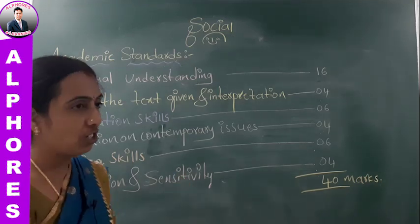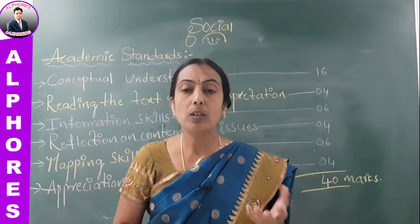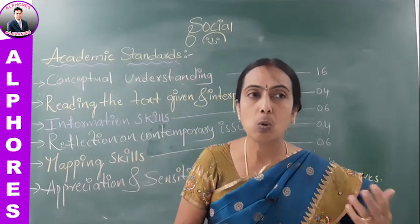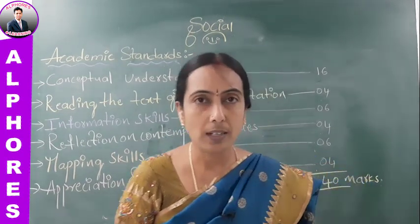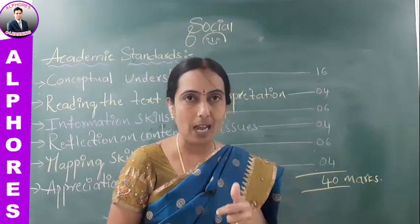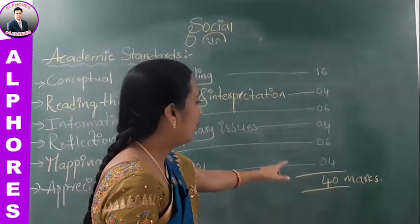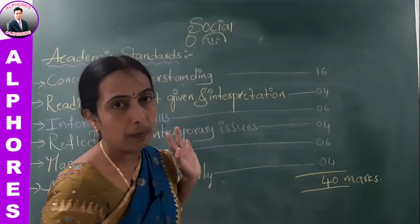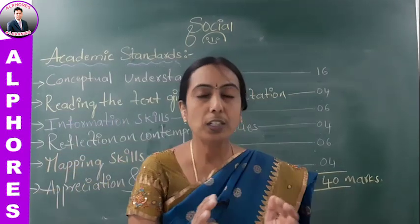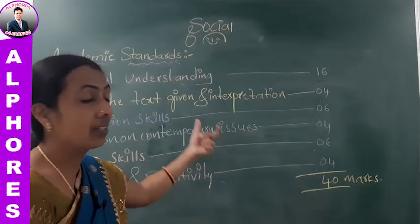AS6 is appreciation and sensitivity. They will ask you to prepare a pamphlet, prepare a poster, write about qualities you like, or write a letter. Such questions are asked and account for four marks. The total paper is 40 marks. Now I am going to explain the questions according to the standards from the first lesson.